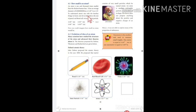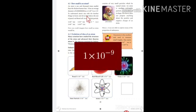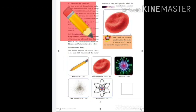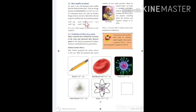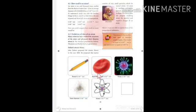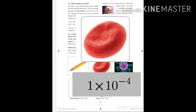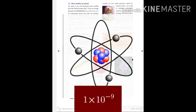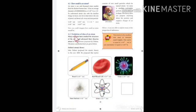The average diameter of an atom is 1 × 10⁻⁹ meter. To understand the size of an atom, let's compare it to known things: a pencil is 1 × 10⁻² meter, red blood cells are 1 × 10⁻⁴ meter, a virus is 1 × 10⁻⁶ meter, dust particles are 1 × 10⁻⁷ meter, and an atom is the very smallest at 1 × 10⁻⁹ meter. Now you can imagine how small an atom would be.